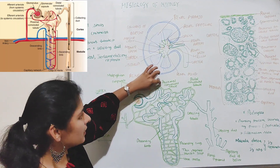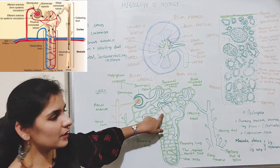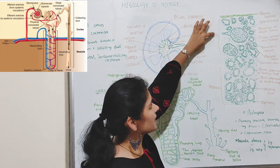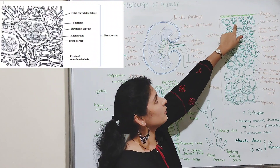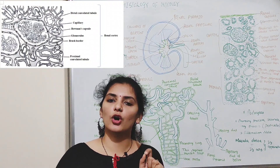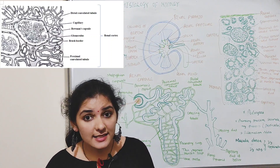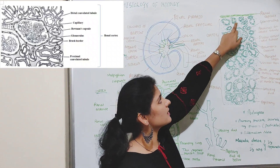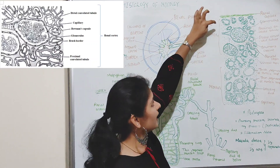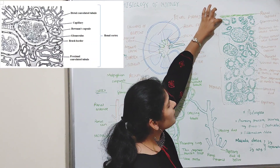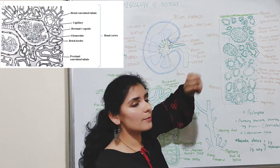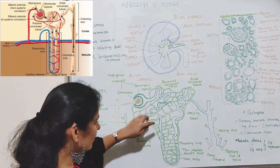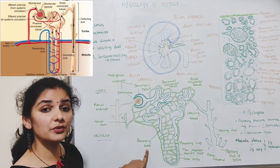The Malpighian corpuscle leads to the proximal convoluted tubule, which is a highly coiled or convoluted part of the nephron present in the cortex region. The proximal convoluted tubule is lined by a single layer of columnar or cuboidal cells, and these cells have microvilli at their apex. Because of these microvilli, it gives a brush border appearance. The terminal part of the proximal convoluted tubule is straight and joins with the descending limb of the loop of Henle.